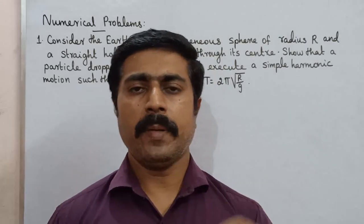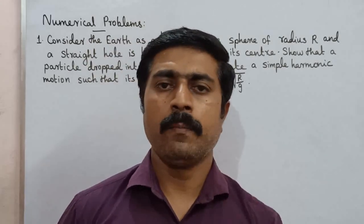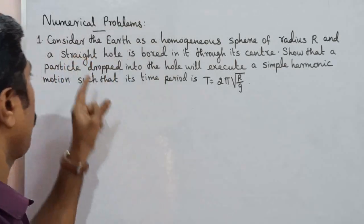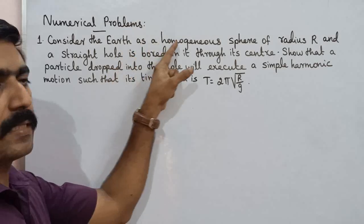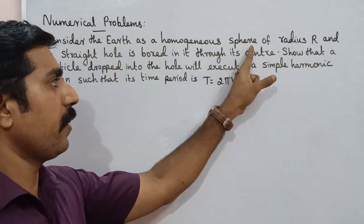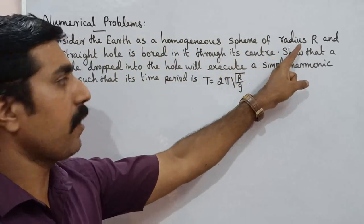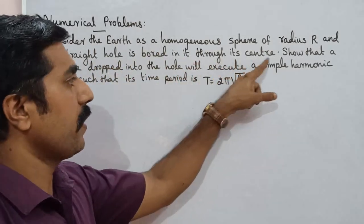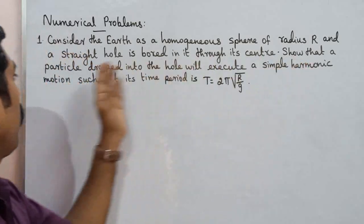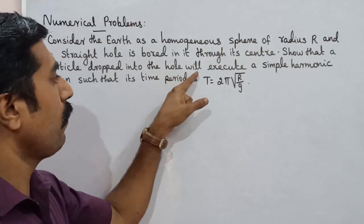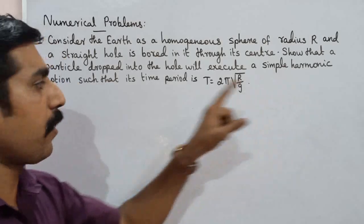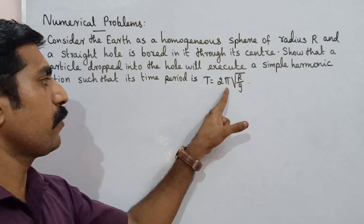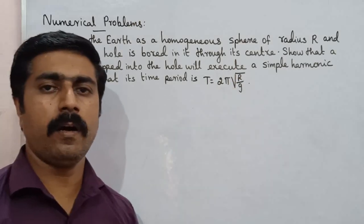Hi students. I am going to talk about numerical problems. See the problem. Consider the earth as a homogeneous sphere of radius capital R and a straight hole is bored in it through its center. Show that a particle dropped into the hole will execute simple harmonic motion such that its time period T is equal to 2 pi into square root of R by G.